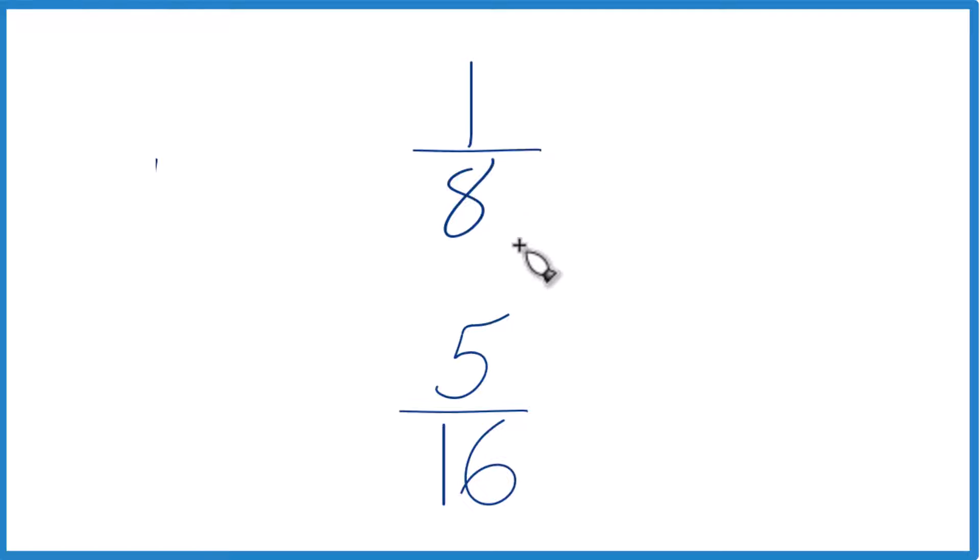We could find a common denominator, a number that both 8 and 16 go into evenly. Because if we had the same denominator, we can just compare the numerators here, and we'd know whether 1 eighth is greater than, less than, or equal to the fraction 5 sixteenths.